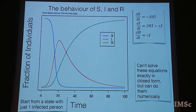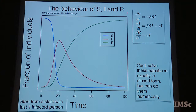These equations cannot be solved analytically in closed form, but they can be solved very easily numerically. Here is an example of what happens if you start with just one infected or a very small number of infected people. The infected population — the red line — starts off very small, goes up to a peak, and then decays to zero. The susceptible population starts off at the largest value and comes down. The recovered population starts off low then picks up. This is the result of solving these equations starting from a very small number of infected individuals and a large number of susceptibles.